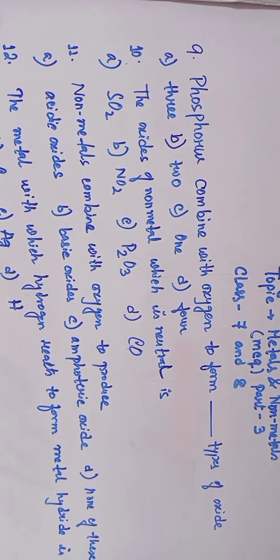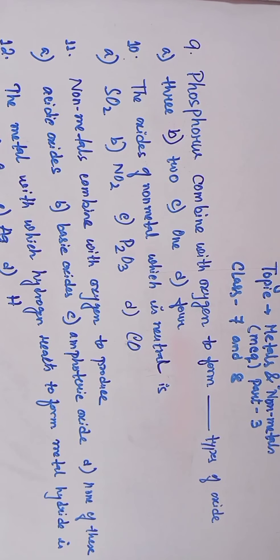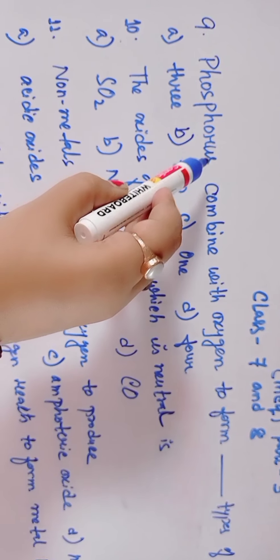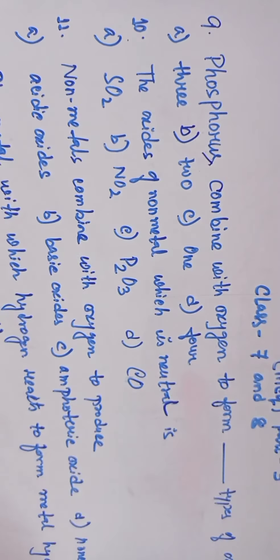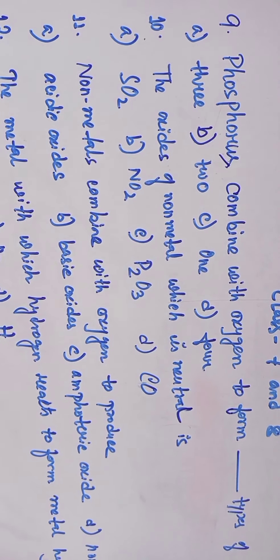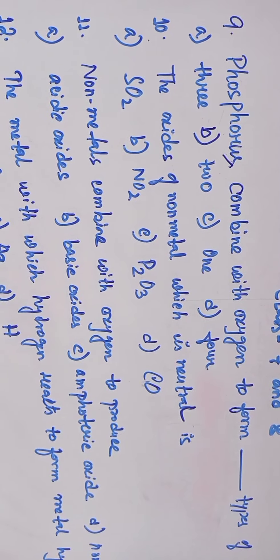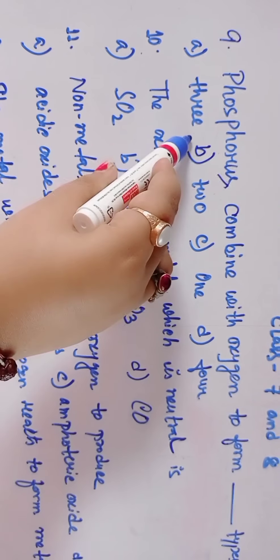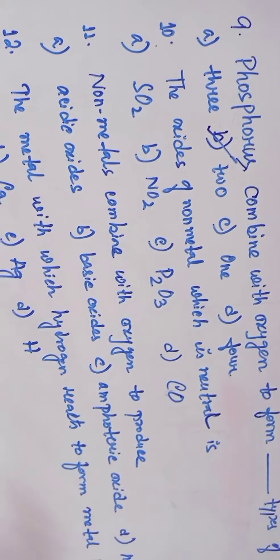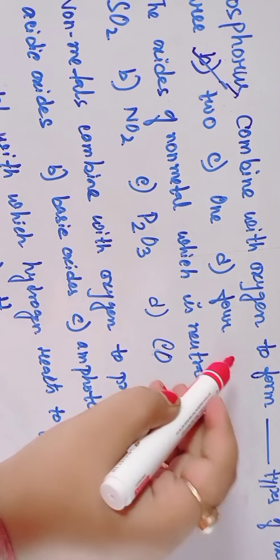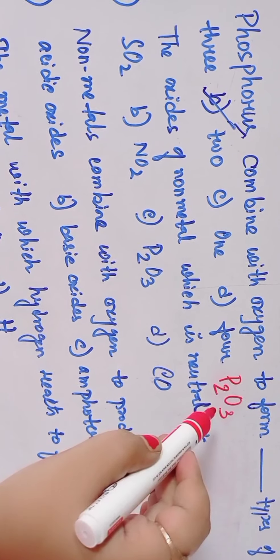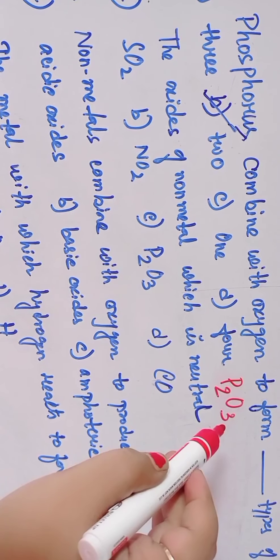Question 9: Phosphorus combine with oxygen to form dash type of oxide. Option A, Option B: 2, Option C: 1, Option D: 4. The answer is B: two types of oxide. P2O3, phosphorus trioxide.